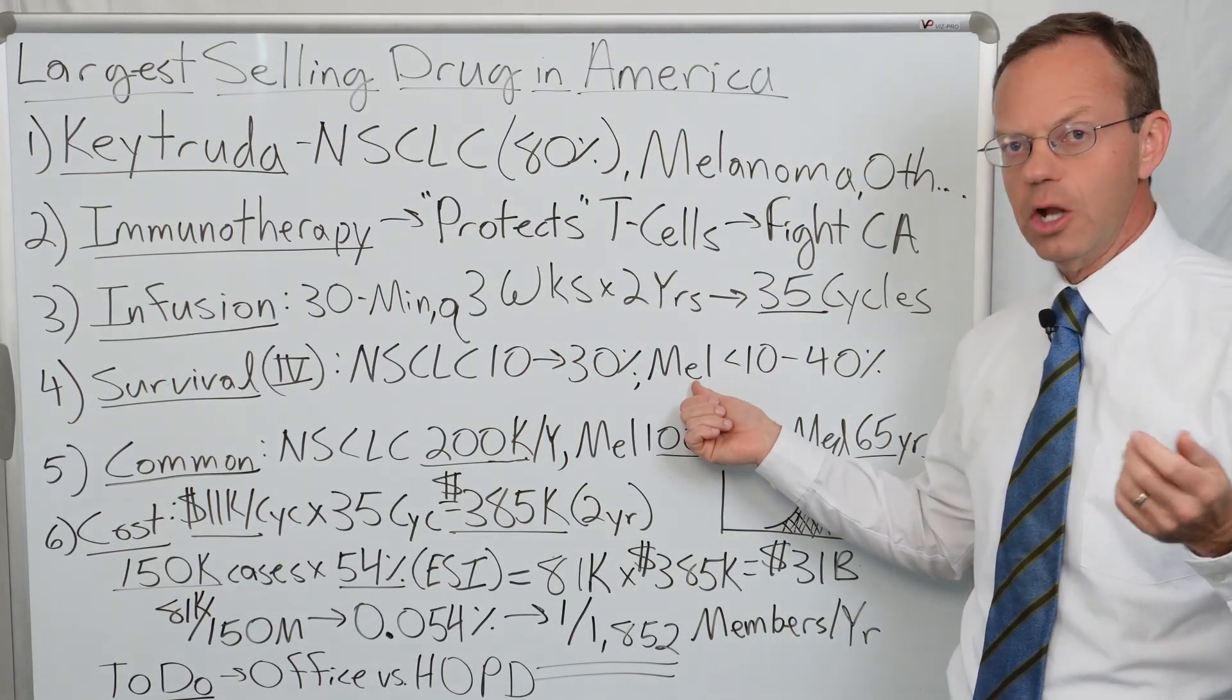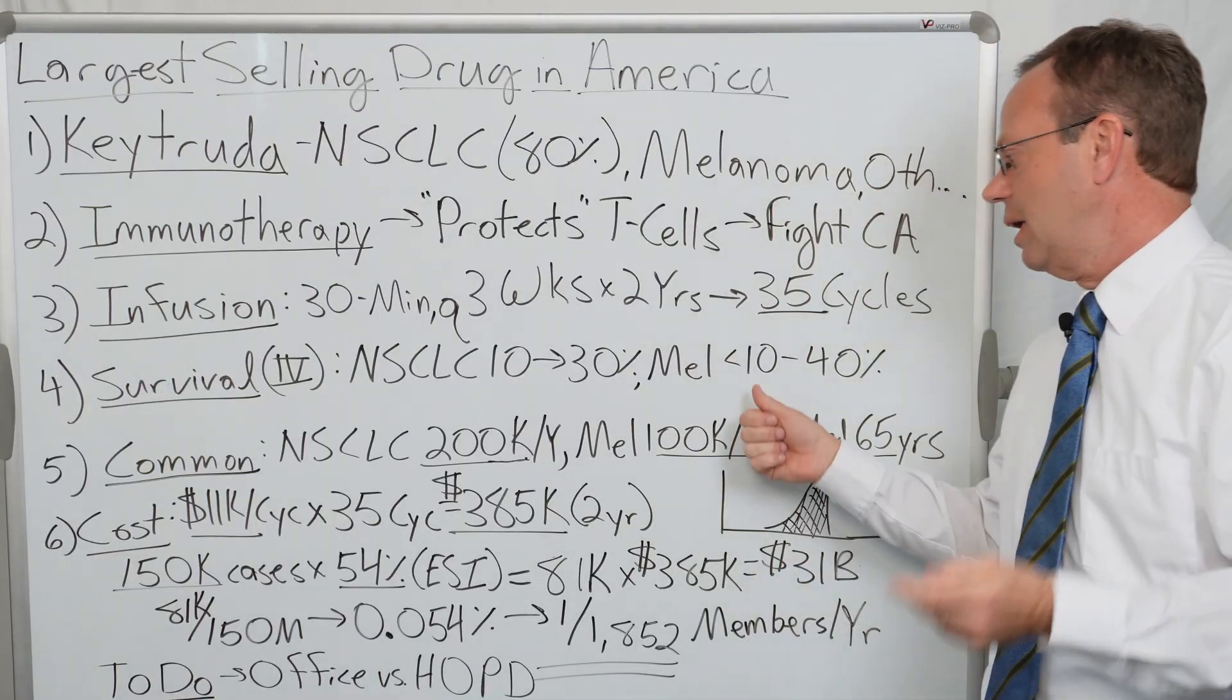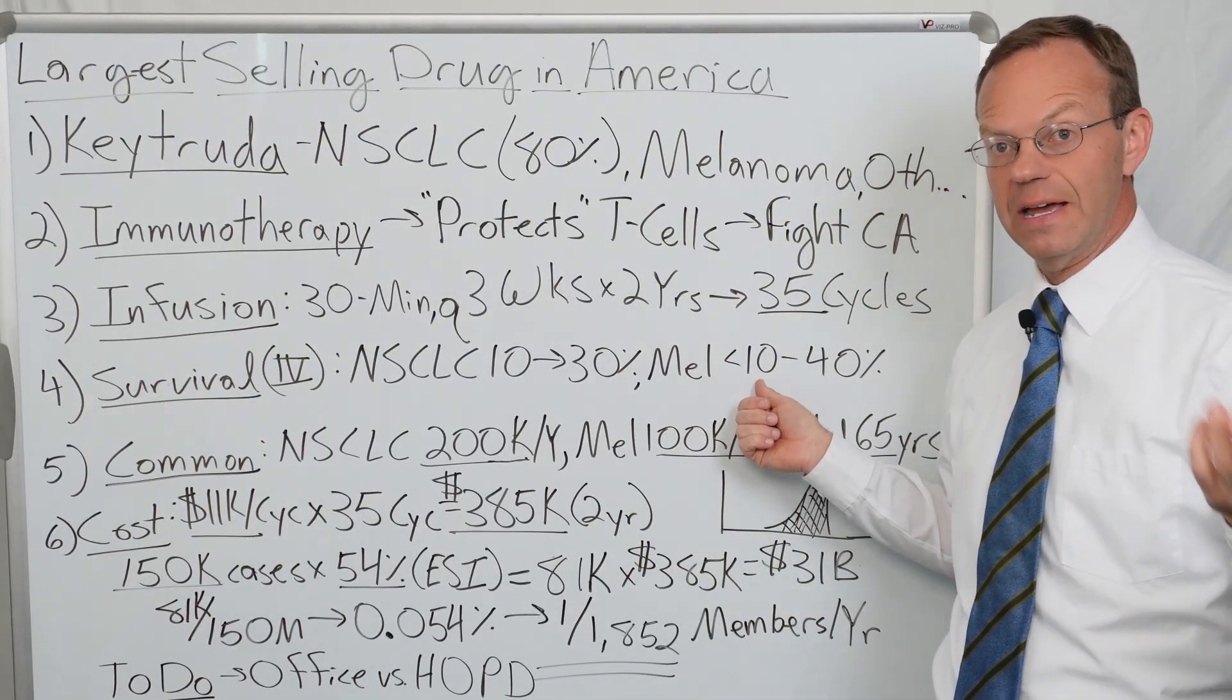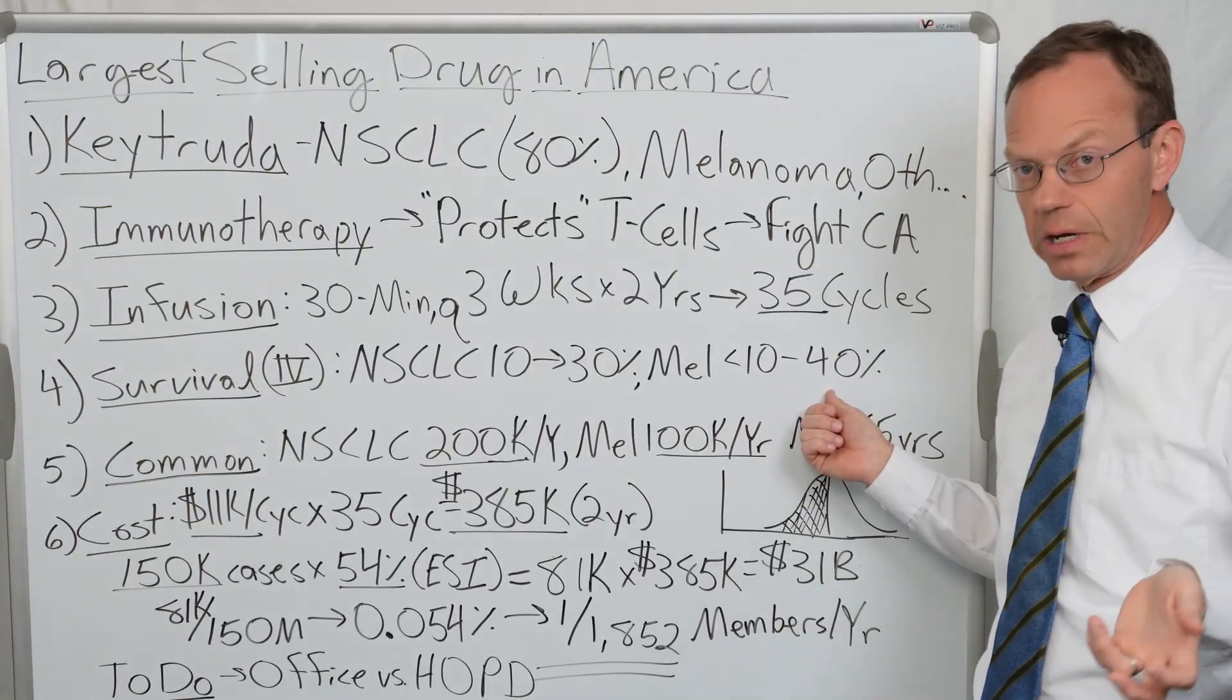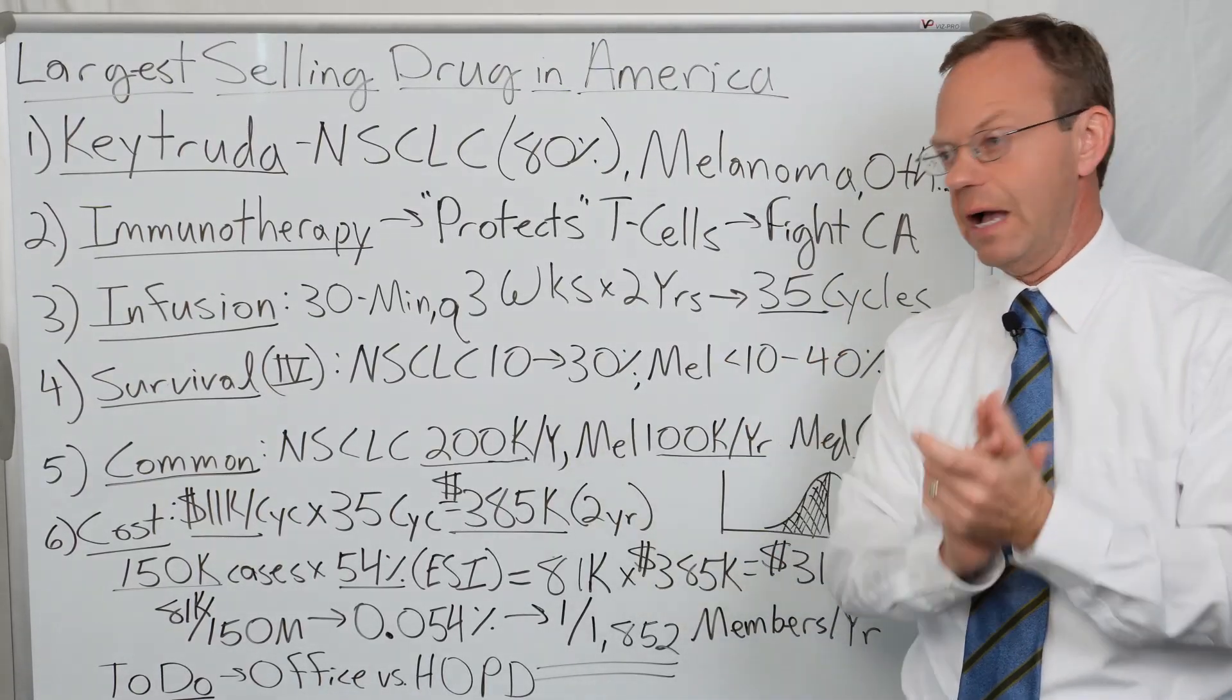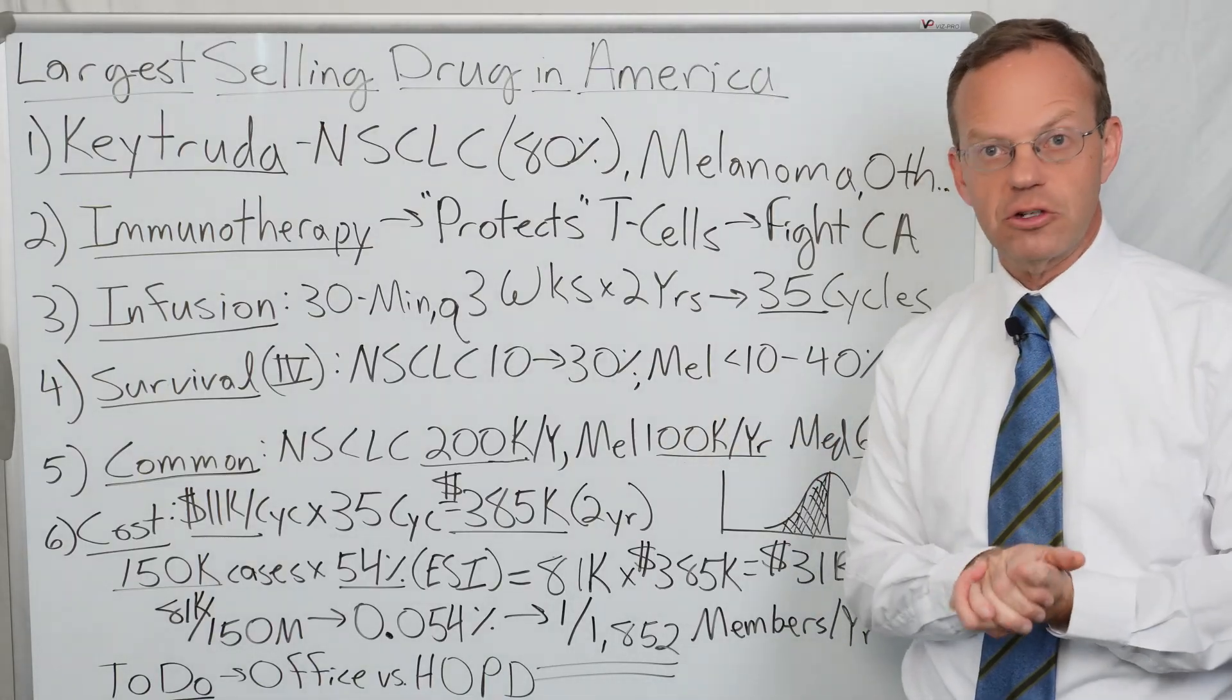Likewise for melanoma, people with metastatic stage four melanoma, after five years less than 10% of people were alive. Now with Keytruda it's about 40% of people are alive. It's a four to five times increase in survival rate as a result of Keytruda.